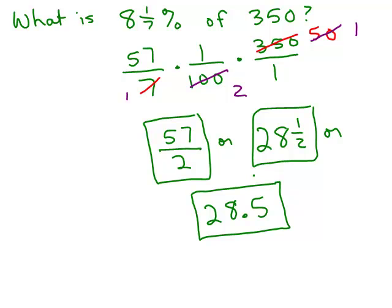Now of course if you want to do all this with your calculator, in this case it actually would have worked out because it wouldn't come up with a repeating decimal. The original numbers you had in the numerator were 57, 1, and 350, and in the denominator 7 times 100 times 1. So if you did this multiplication in the numerator and divided it by 700, you would get 28.5 coming up on your calculator.